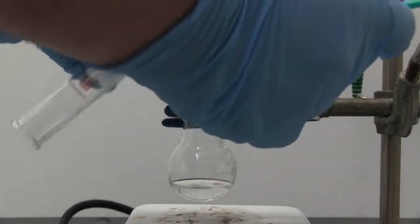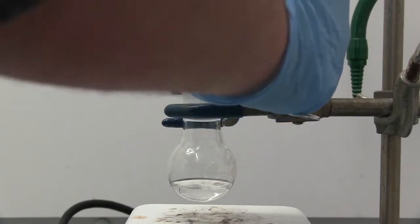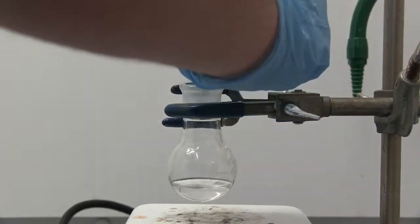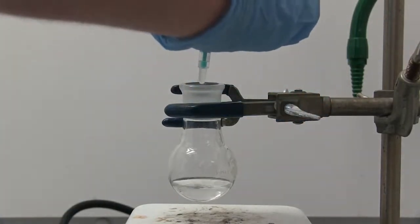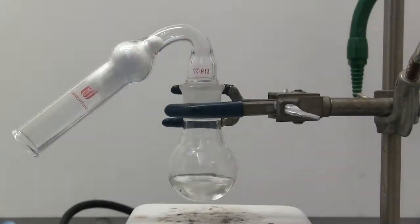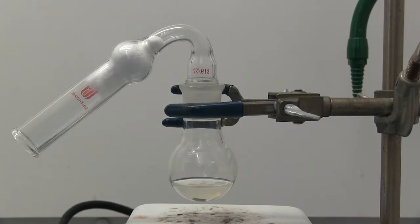So now we're going to add, drop-wise, our methyl iodide. And we should see a reaction begin to form. Make sure you add your drying tube and we'll get a stir rod in there. All right, I am beginning to see a little bit of bubbling and a little bit of cloudiness in the solution. So we're going to let this run for a little bit and try and let it fully react.